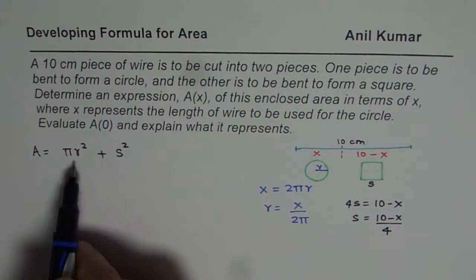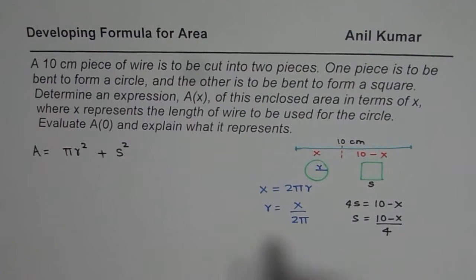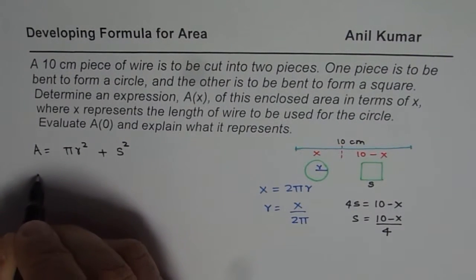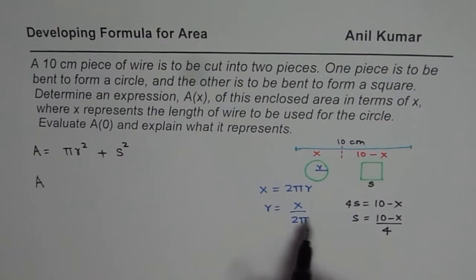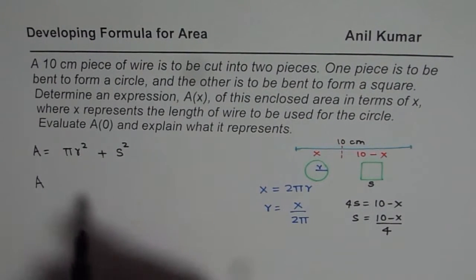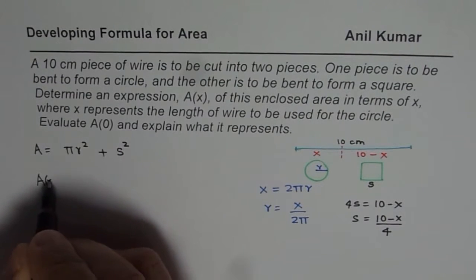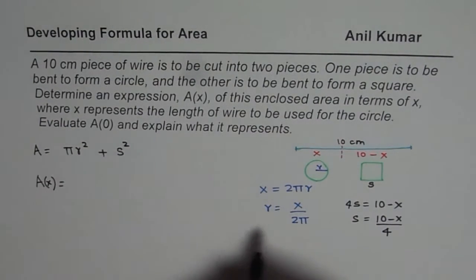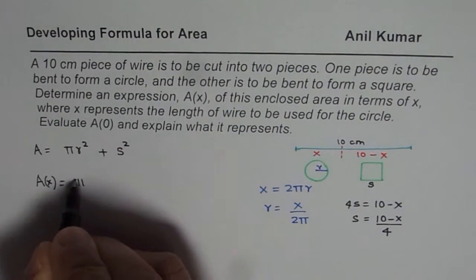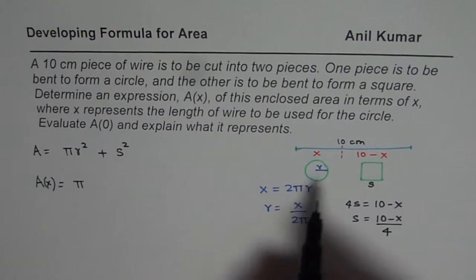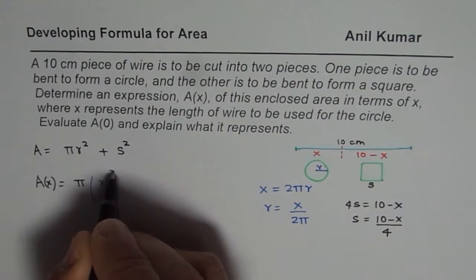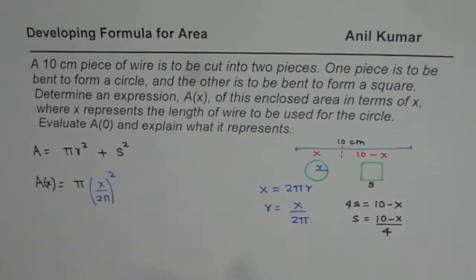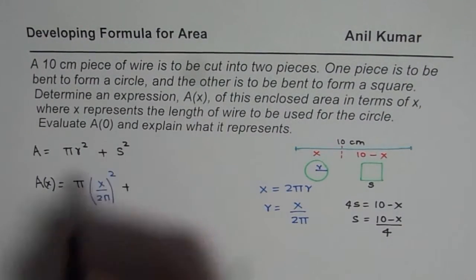So we have related both the variables. Now it is a question of composing one function which has these two variables replaced by x. So we get function A(x). Since we are replacing R with this, we will write π, and instead of r² we will write (x/2π)². Plus side square.